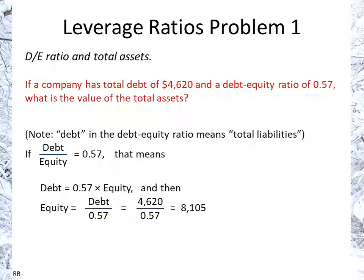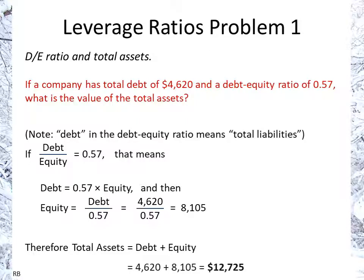Substituting in the value 4,620, we get a value of equity of 8,105. Since total assets equals debt plus equity, we add together 4,620 plus 8,105 and get our answer: 12,725.